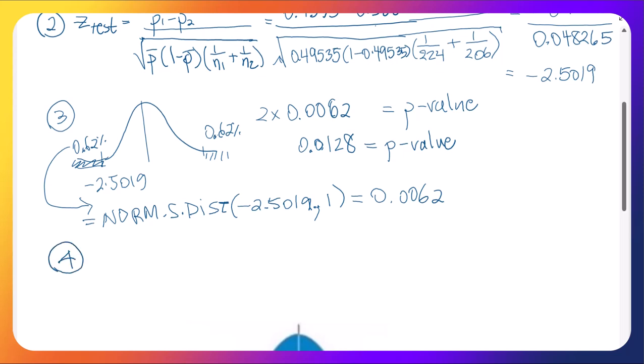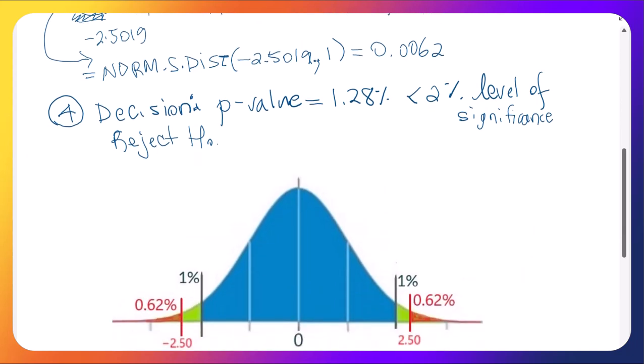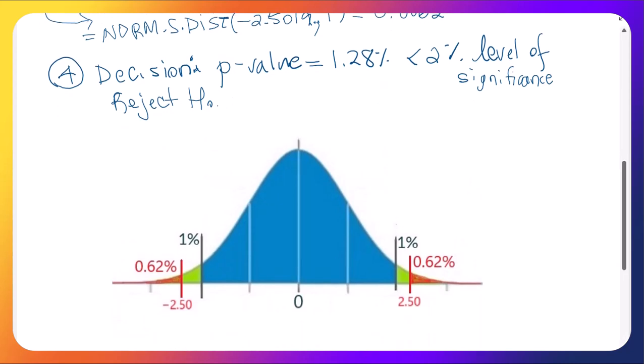Next is to make a decision. Since this P value, which is 1.28%, since that's less than our 2% level of significance, then we reject H0. So our decision is to reject H0. Let's have a look at the picture here. This one right here is actually our test result. It's within this rejection region. So we reject H0.